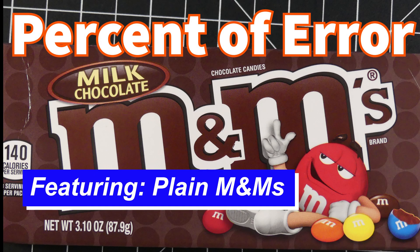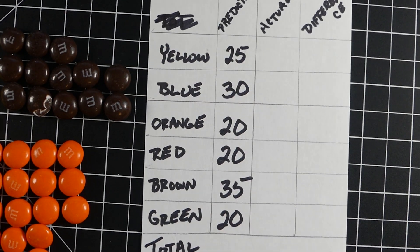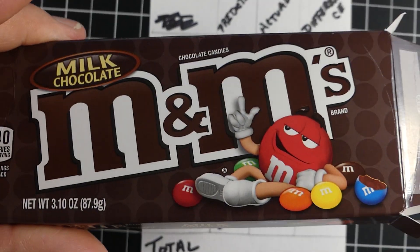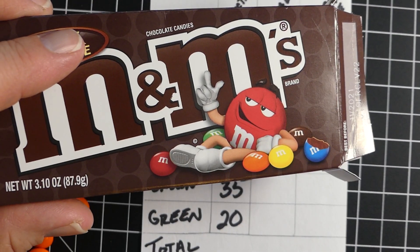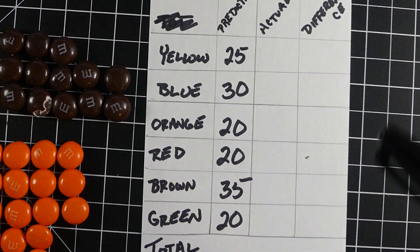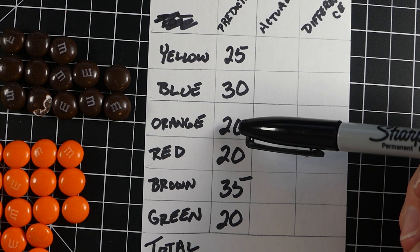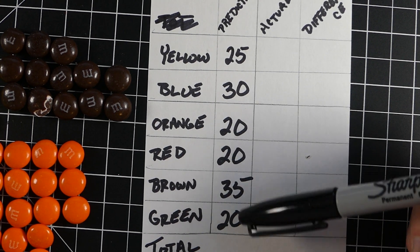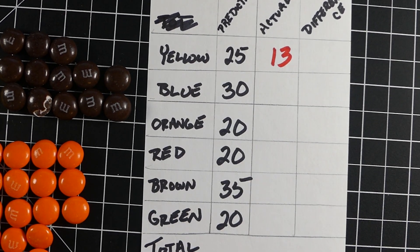In this video we're looking at percent of error featuring the world-famous plain M&Ms. I looked at this box that you might find at a movie theater and made some guesses. I guessed how many total would be in the box and how many of each color. For example, I guessed 20 for the orange, red, and green, and predicted 150 total.